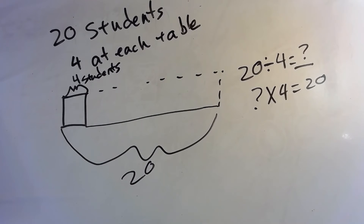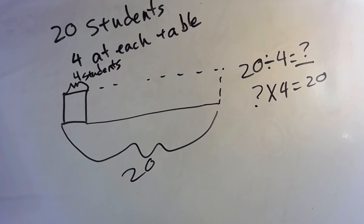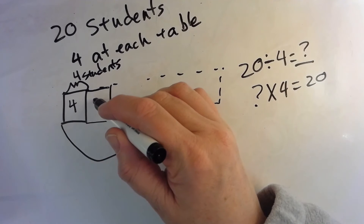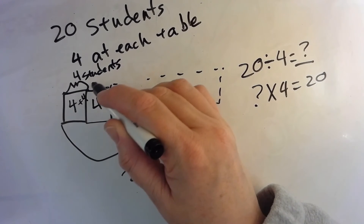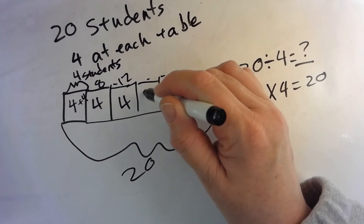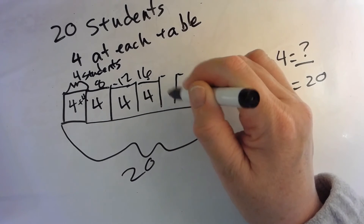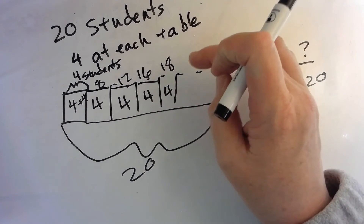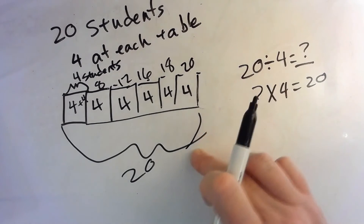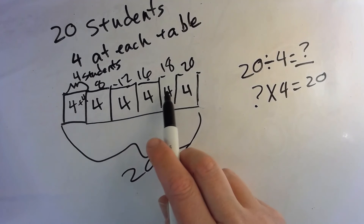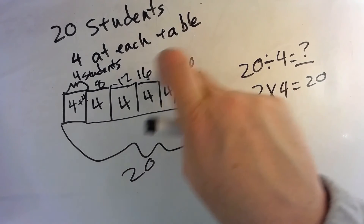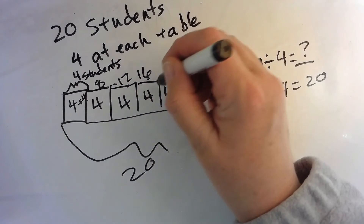To solve the division, I can add units of four to the tape diagram until I get to 20. So skip counting: 4, add four more is 8, add four more is 12, add four more is 16, add four more is 20. I made a small error and corrected it — the final count is 4, 8, 12, 16, 20.